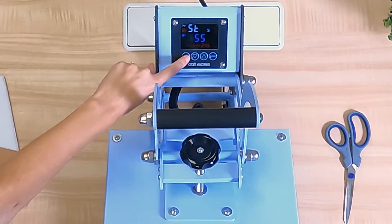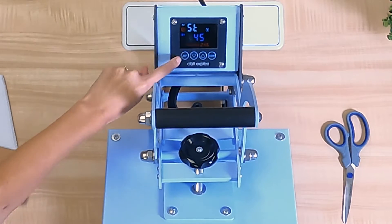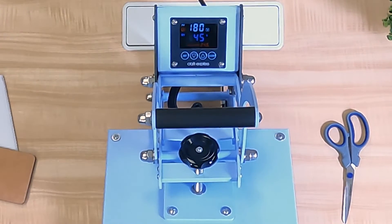Click the Set button again, and then click the up and down arrows to set the time. We are setting our press to 45 seconds. Click the Set button once more to lock in your settings.